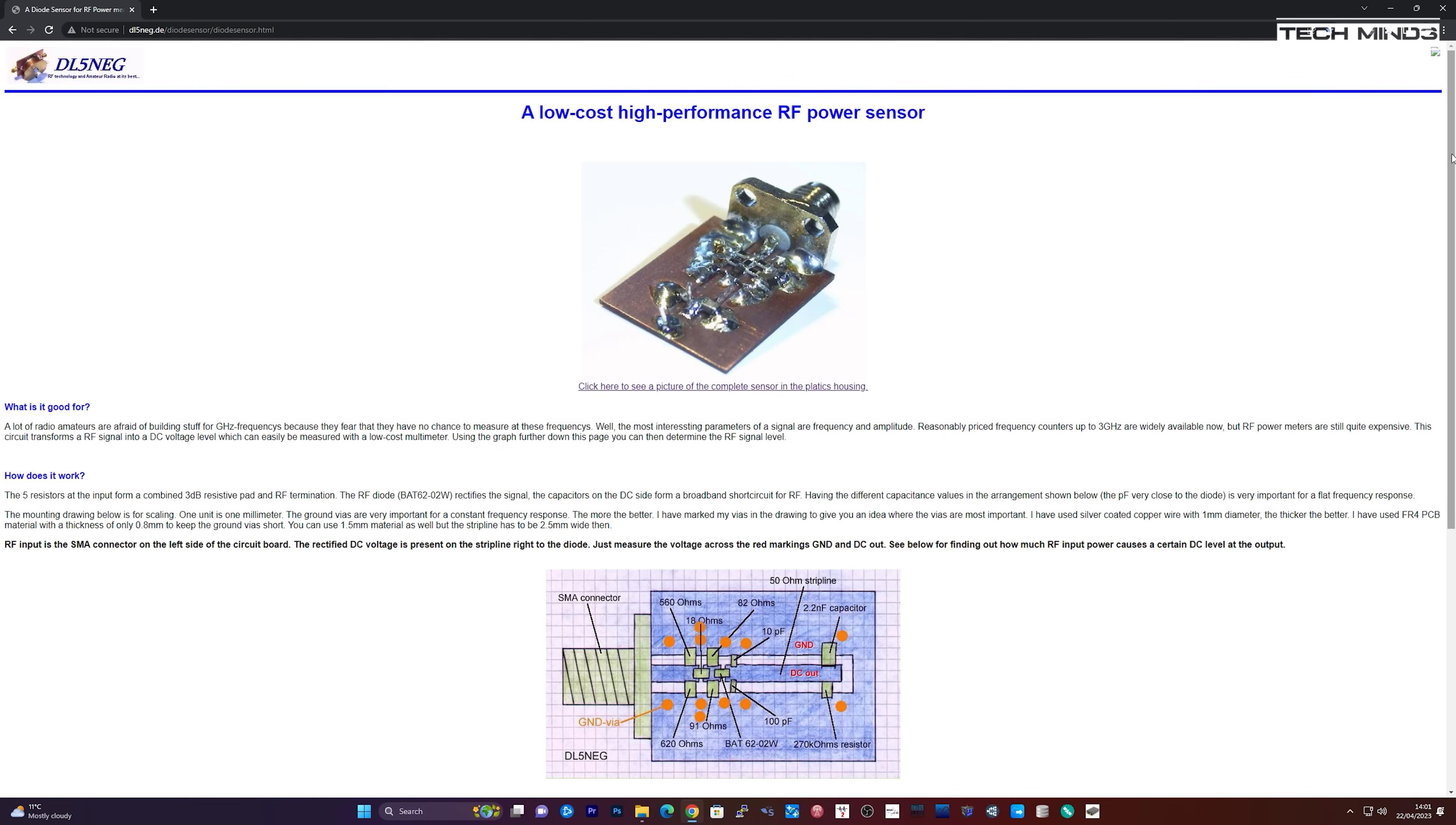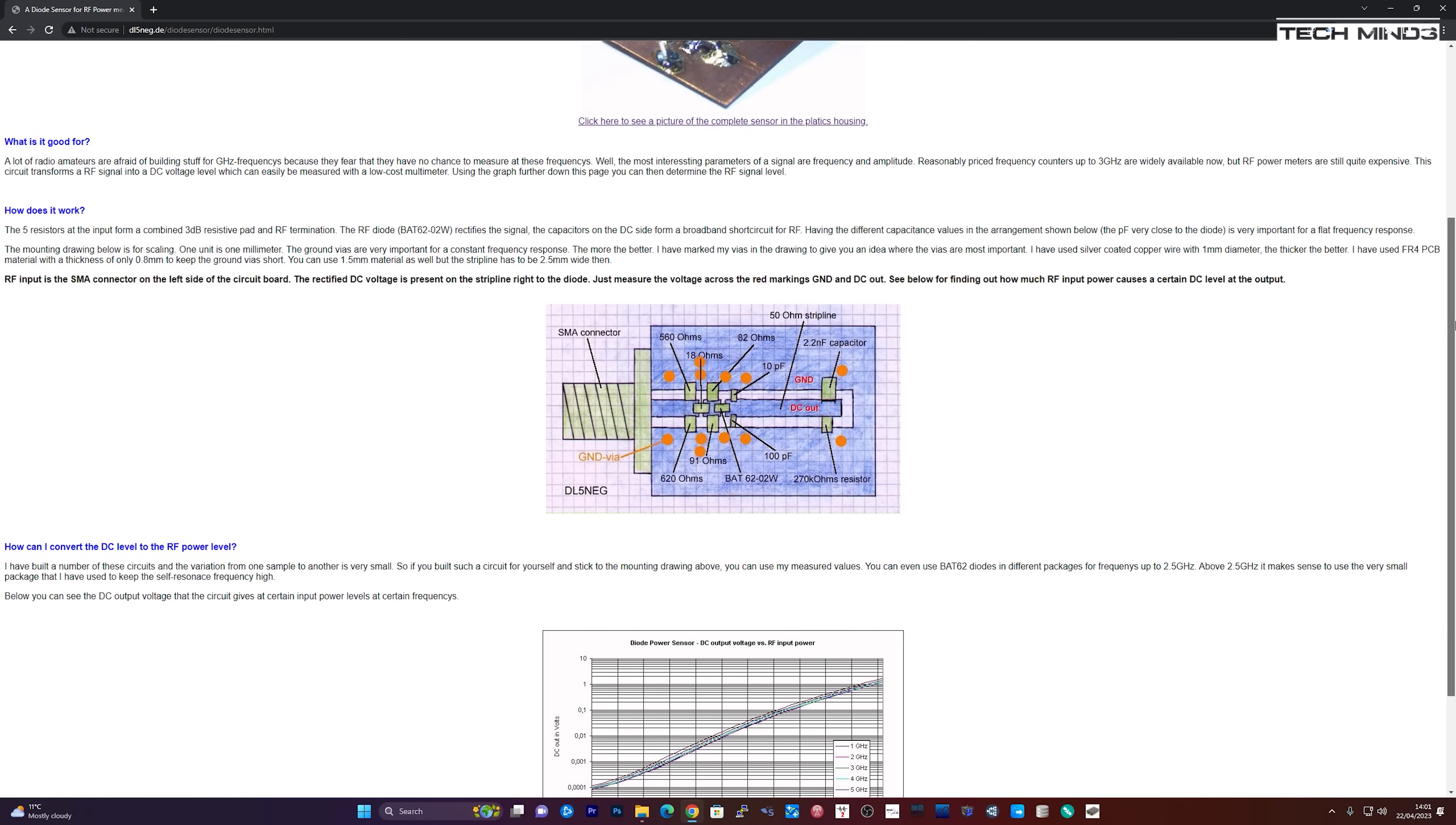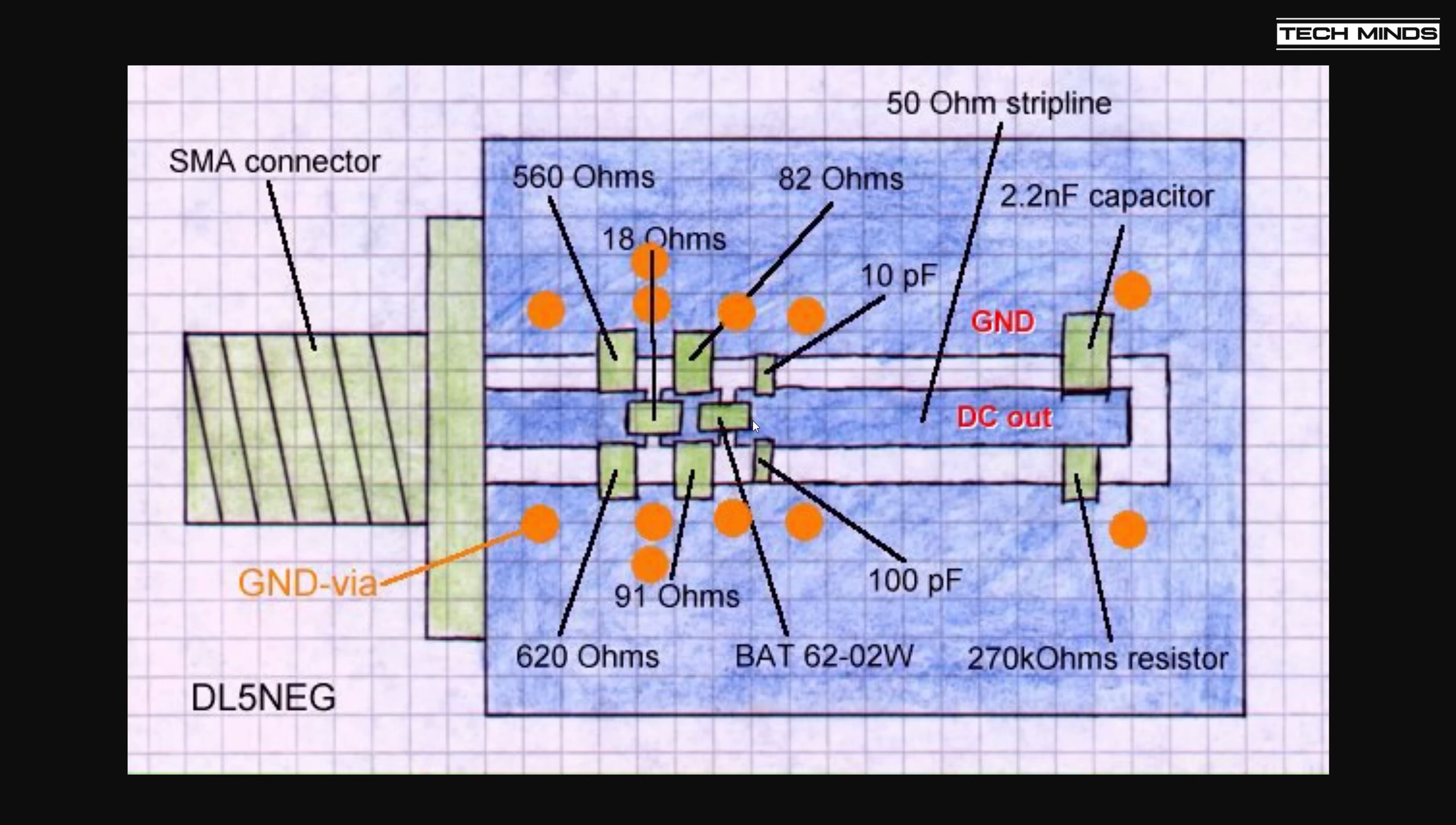Technically, how this works is that you input an RF signal via the SMA connector, and out the other end will be a DC voltage. But how do we know what level of voltage equals what level of RF power?